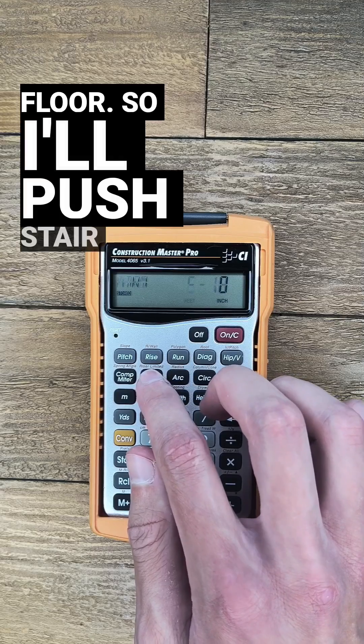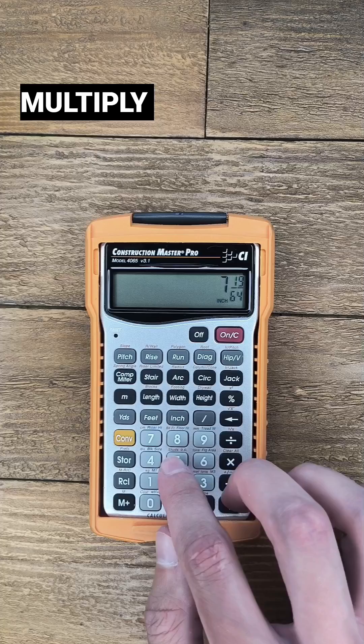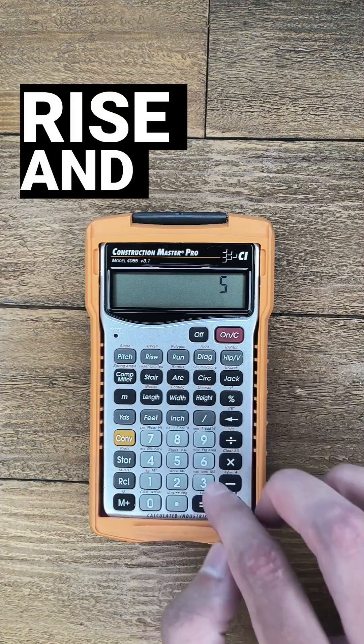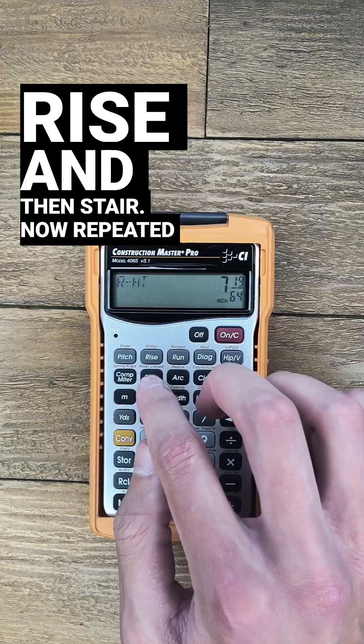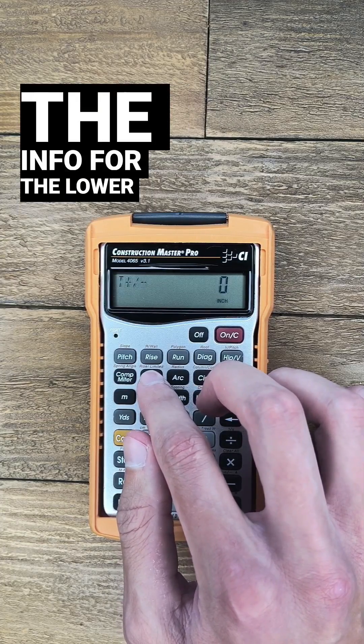So I'll push stair to toggle back to the riser height. Multiply that by 5 and push rise and then stair. Now repeated pushes for stair will give me all the info for the lower riser.